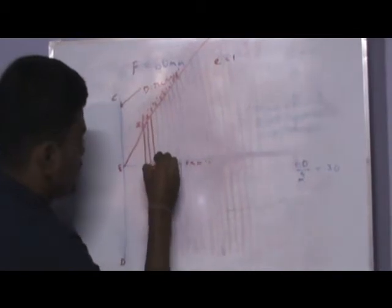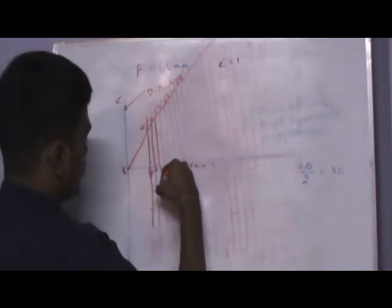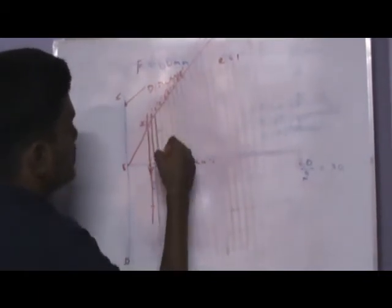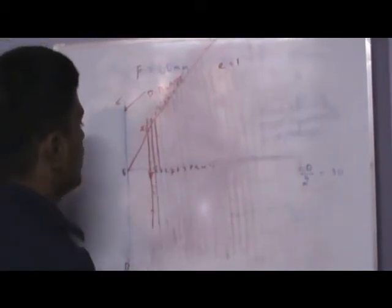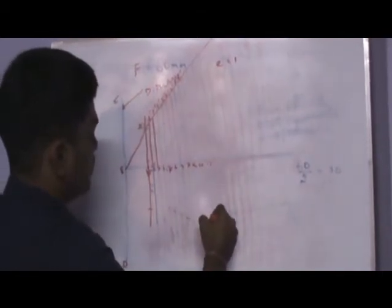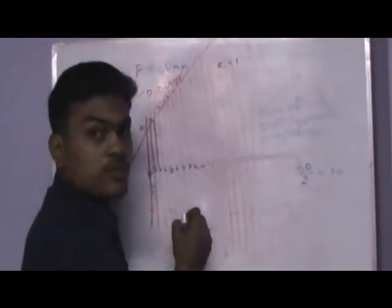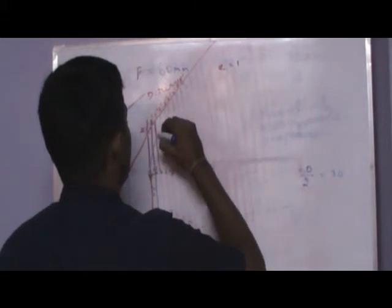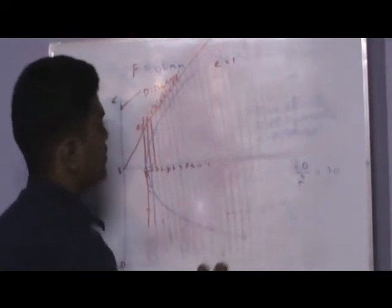Take the distance of 3 and 3-dash. From the focus, cut another arc both top and bottom. Likewise, take the distance of each pair of lines — 1-1-dash, 2-2-dash, and so on — and from the focus cut an arc each time. After cutting all the arcs, draw a smooth line passing through them. At last, you will get a parabola.